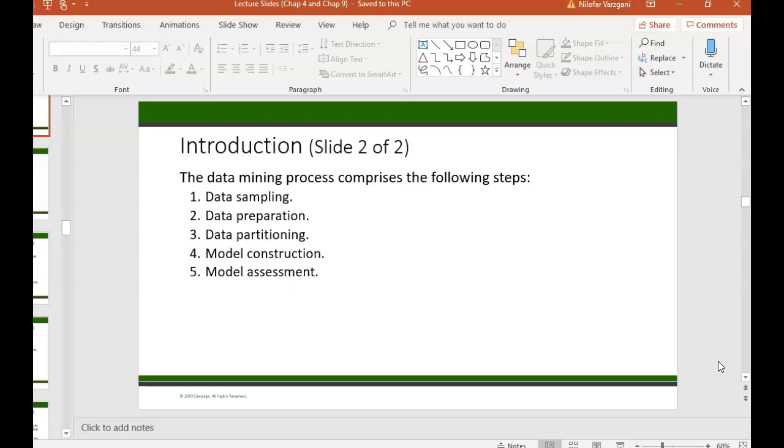Instead, you want to use something as a proxy for those missing values. It could either be the average of the whole data set, or you could use the nearest neighbor to replace that missing value. So those are the kind of decisions you would be making in the data preparation stage.